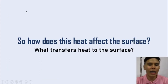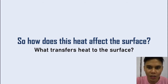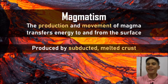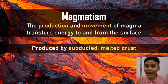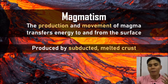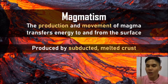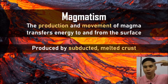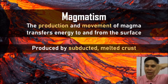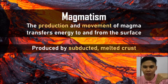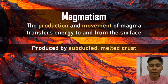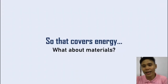What happens to the crust? How does this energy affect the surface? It causes lots of things. First, we have magmatism — the production and movement of magma. It transfers energy to and from the surface because magma has a lot of energy. Magma is produced by subducted crust that got taken down under the Earth. When crust gets pulled down, it gets melted by the heat and pressure of the Earth, and then it forms new magma which participates in the convection currents and transports energy to other places. So that about covers energy.